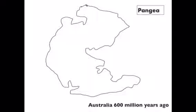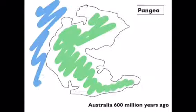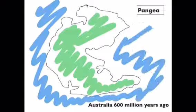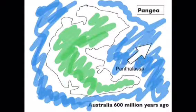600 million years ago, Australia was part of the supercontinent known as Pangaea, and the sea that surrounded it was called the Panthalassa, which was a warm sea.